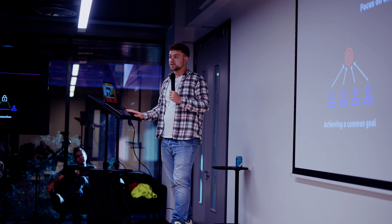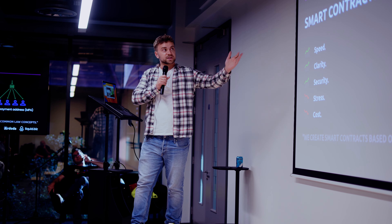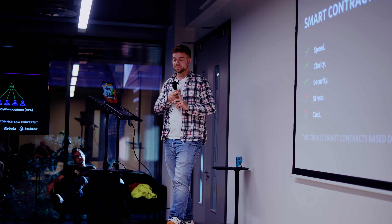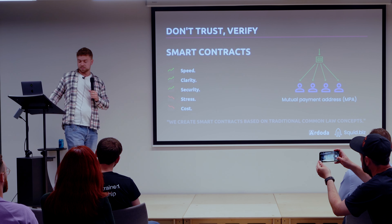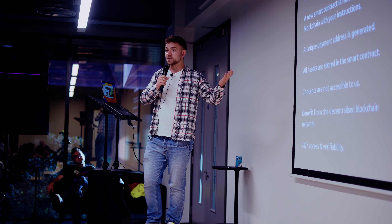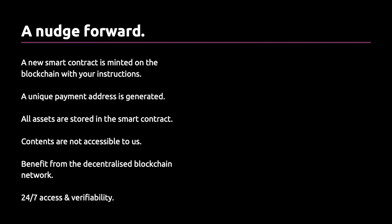Don't trust — verify. Smart contracts give you speed, they give you clarity, and they give you increased security whilst reducing stress and costs. These are some of the characteristics of a well-built smart contract: it has a unique payment address, all assets should be stored on the smart contract. These are all characteristics that are inherent on the blockchain if you build it correctly.